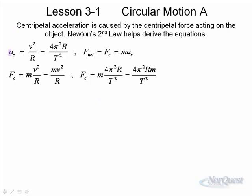We define centripetal acceleration as v²/r. Since net force equals ma, centripetal force equals centripetal acceleration times mass. Taking v²/r and multiplying by m gives mv²/r, which is the standard form. Multiplying the other acceleration equation — 4π²r/T² — by m gives m times 4π²r over T².